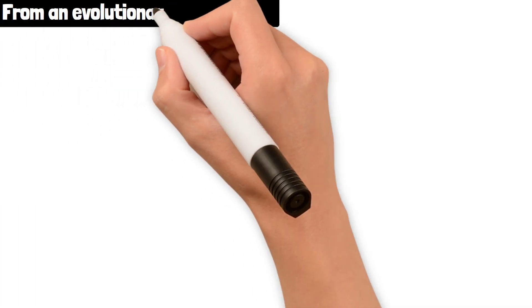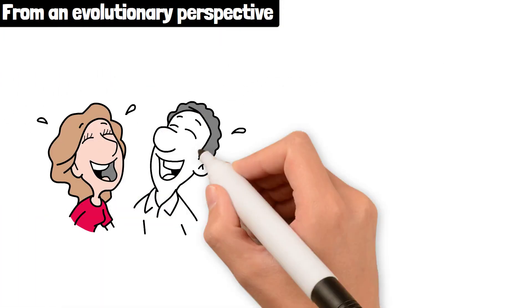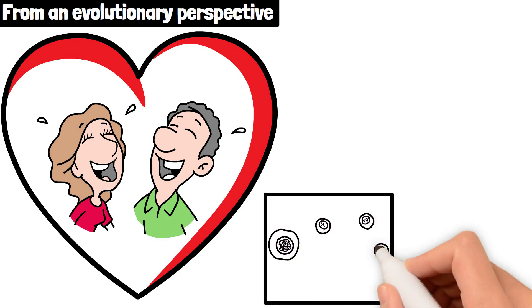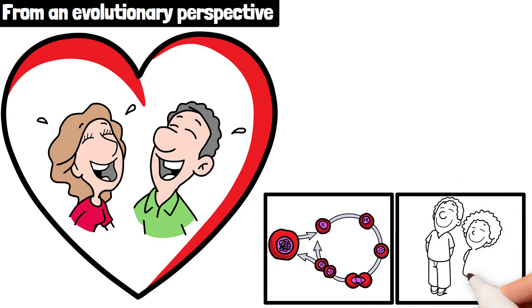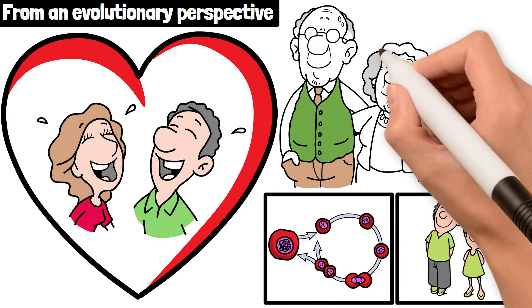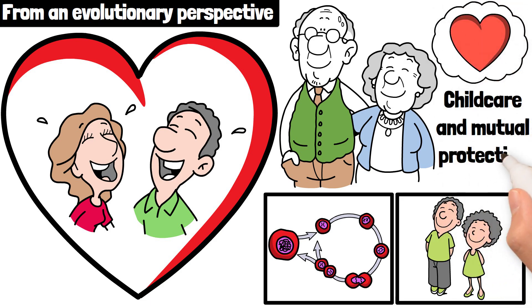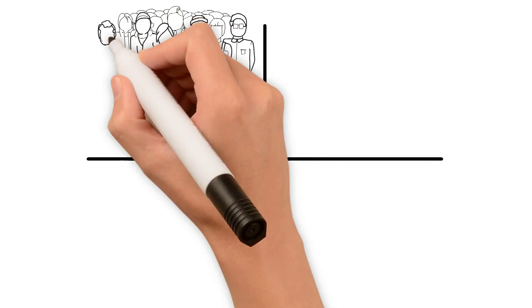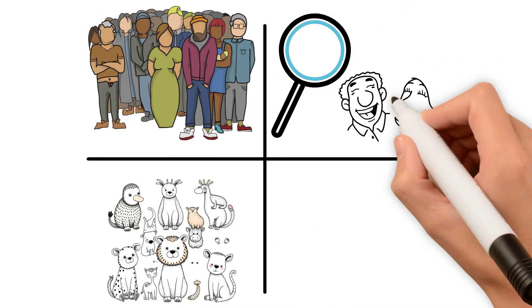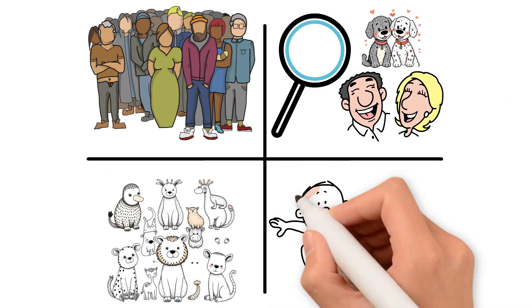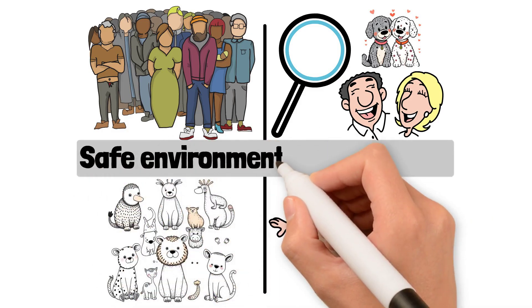From an evolutionary perspective, falling in love has a clear purpose – reproduction and the continuation of the species. In the past, our ancestors fell in love and bonded to ensure childcare and mutual protection. Humans, like many other species, are programmed to seek partners who can offer us healthy offspring and a safe environment to raise them.